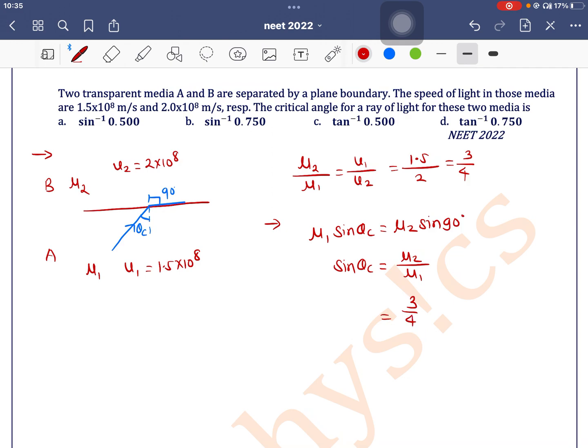3/4, which equals 0.75. So θc equals sin⁻¹(0.75), which means option